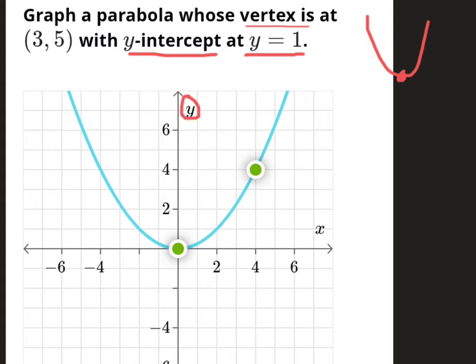So we're looking for the vertex at (3, 5), which is here, where x is 3 and y is 5.